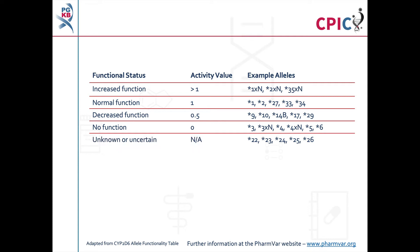It is also important to note that patients can carry multiple copies of CYP2D6. Reports in the scientific literature have described cases where up to 13 copies of CYP2D6 were present in a patient's genome. Alleles which are present in multiple copies are given the suffix XN, where N is the number of copies of that allele present in the genome.